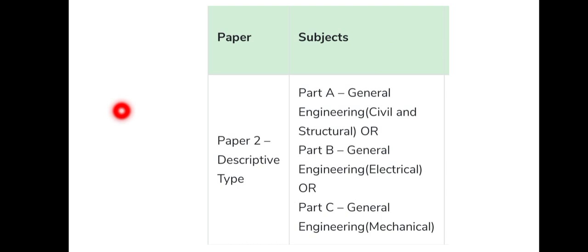Paper 2 is descriptive type — it is not MCQ. It is a descriptive type paper, which is the most important part of the paper tool.